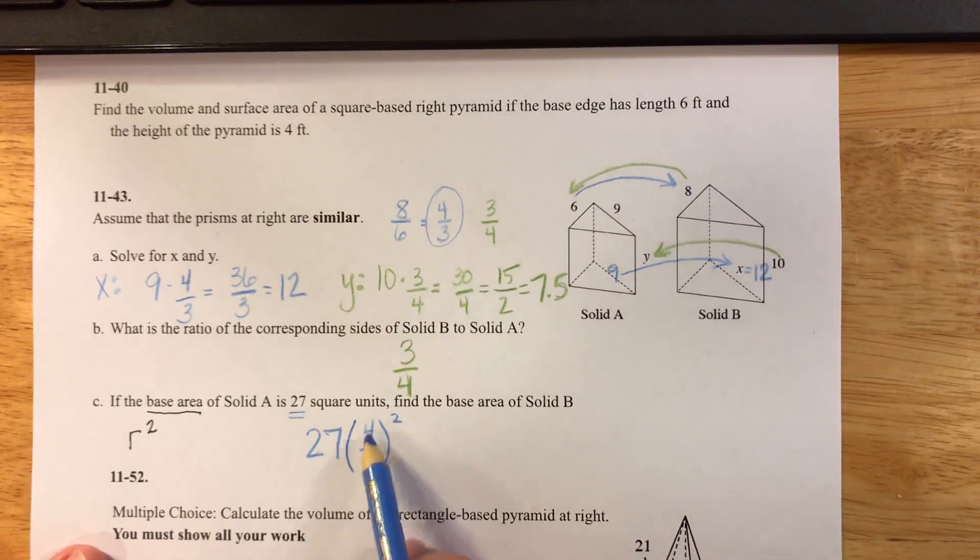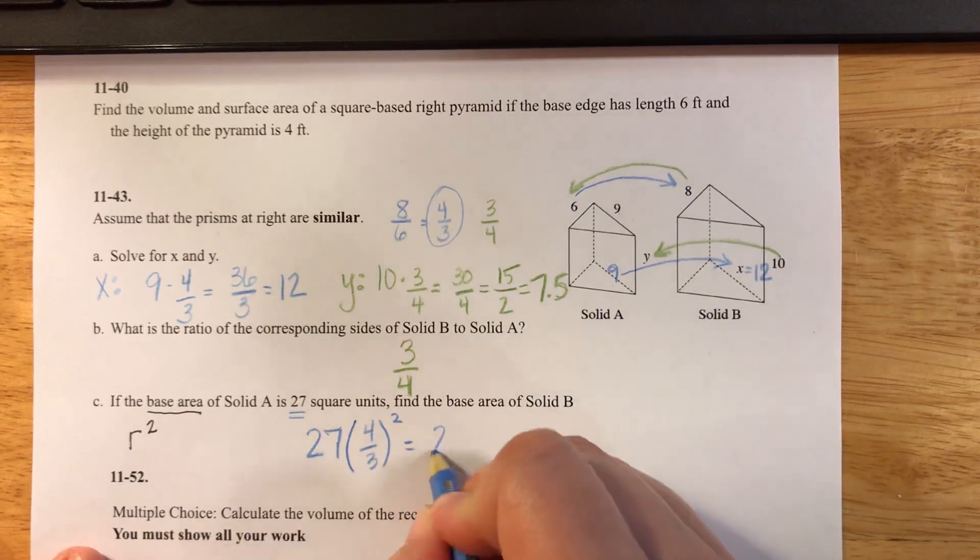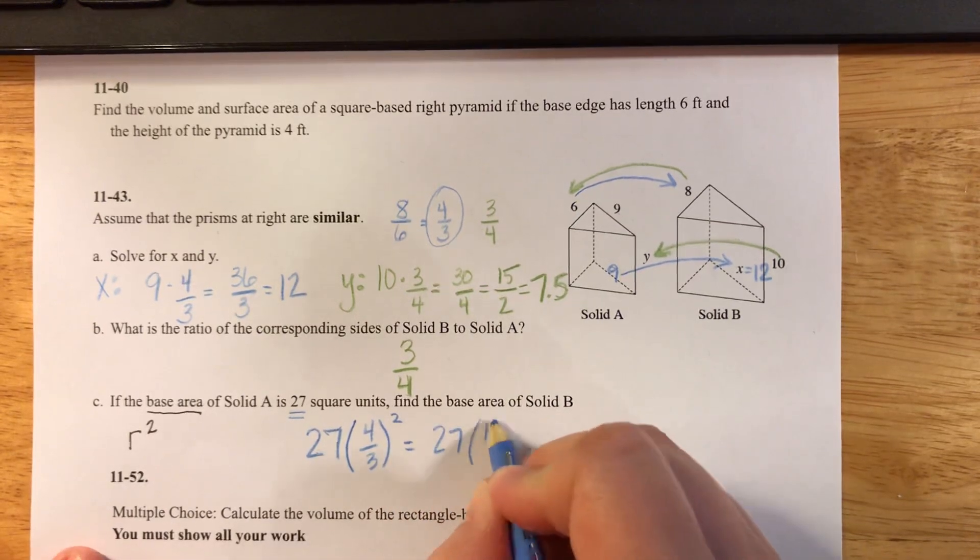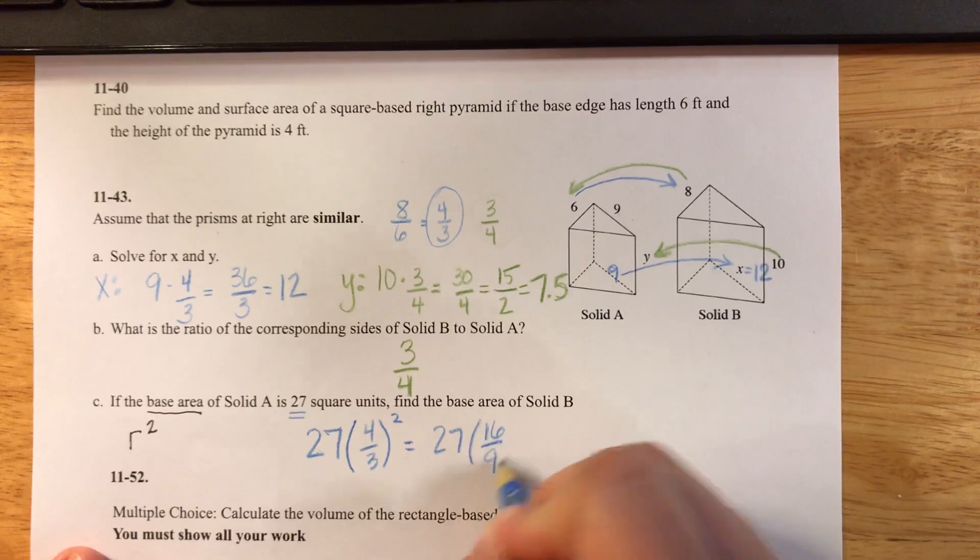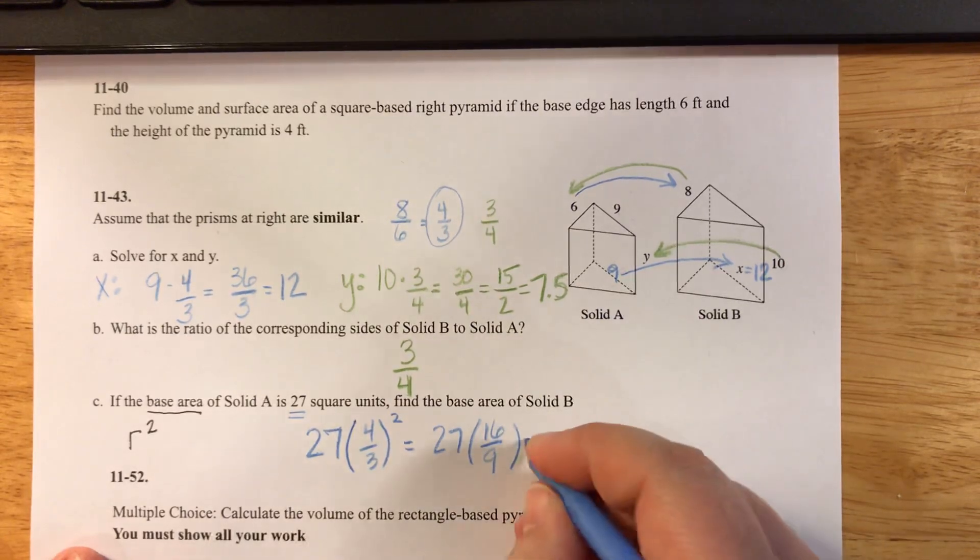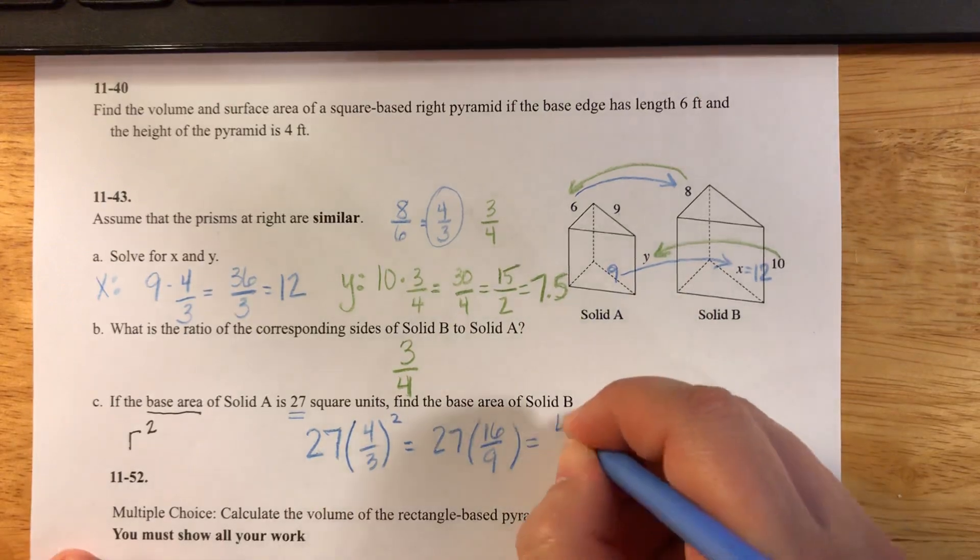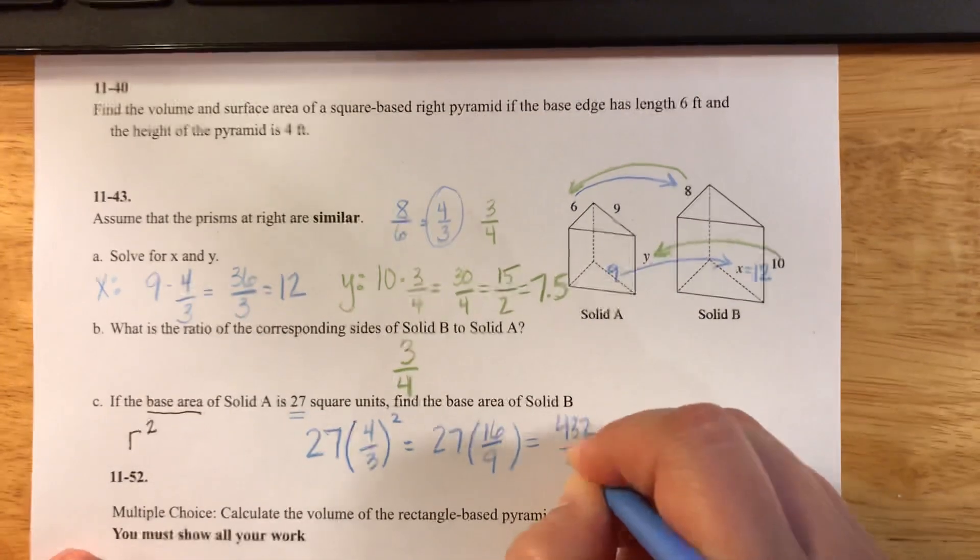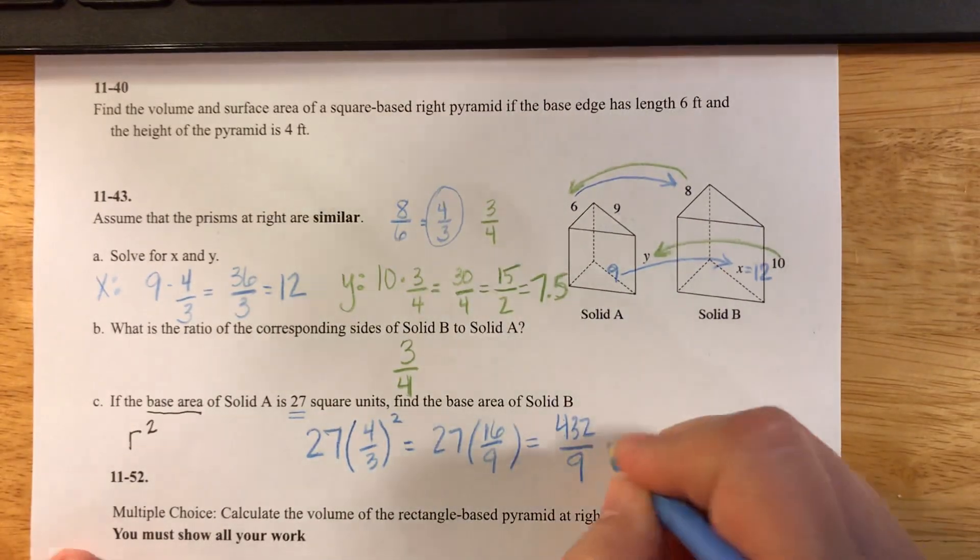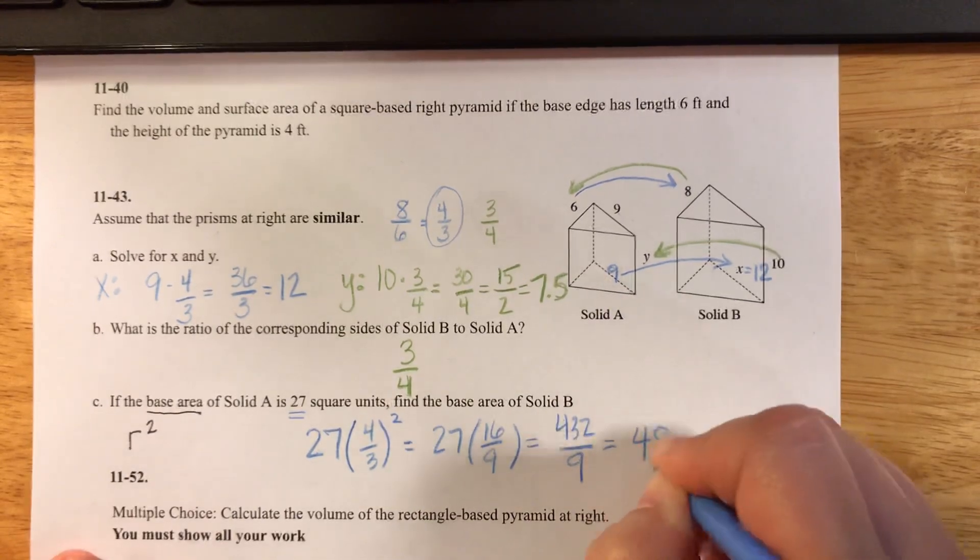The way that I do that is I square the top and I square the bottom. So this is going to be 27 times 16 over 9. If I multiply that out, 27 times 16 is 432 divided by 9. And when I do that, I get 48.